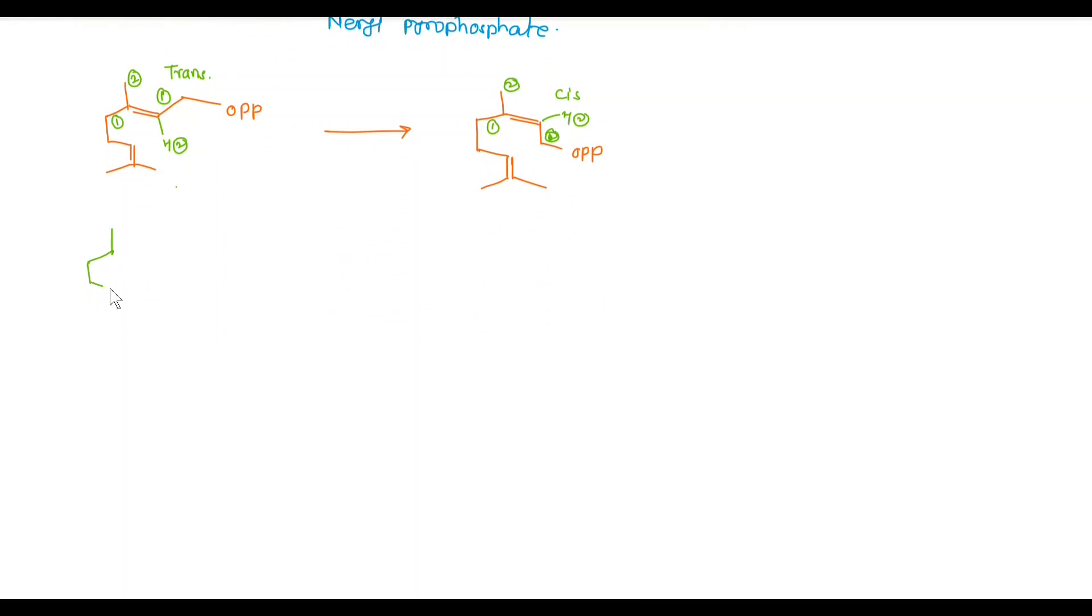Let us see the synthesis of this. In GPP there is loss of minus OPP and we get allylic carbocation. Tautomerization takes place, these pi bonds get shifted and here generation of new allylic carbocation takes place. In the next step, now addition of OPP takes place at this electron-deficient carbon: CH3, CH3, CH3, here OPP, here double bond.